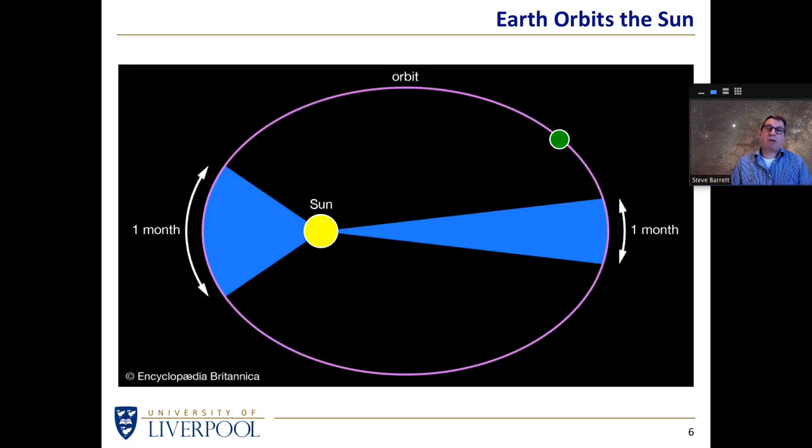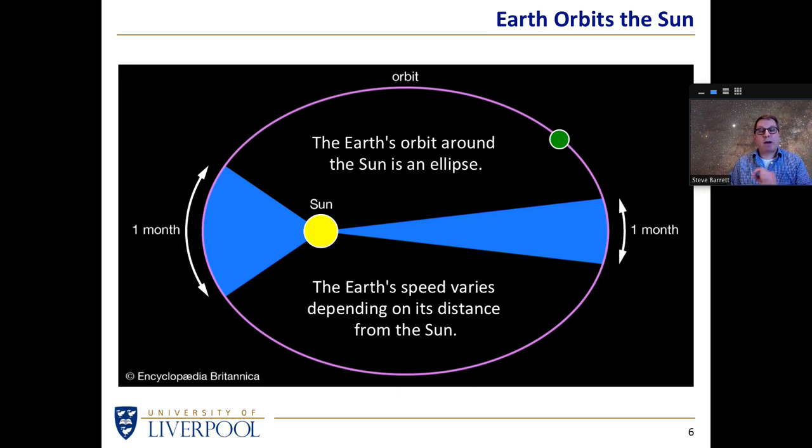As the Earth goes round the Sun, the Earth's orbit is an ellipse, and the Earth's speed varies as we go around the Sun. So even if the Earth is turning on its axis once a day, in terms of where is the Sun in the sky, we have to bear in mind that the Sun doesn't always appear to be in the same place in the sky at the same time of day.